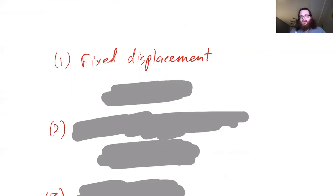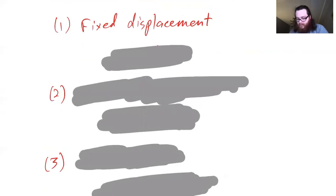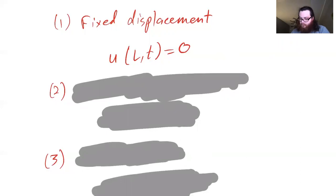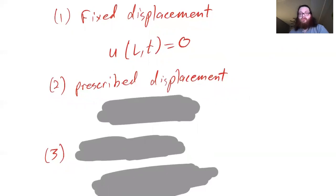One way is: if we have a string and let it vibrate, we can say the endpoints don't displace at all — they're tied down or fixed. The mathematical condition at the right end of the string is just that the displacement is zero at all times. For the left end, you'd replace L with zero. Alternatively, maybe one end is tied to something that can move, which manifests as a prescribed displacement.